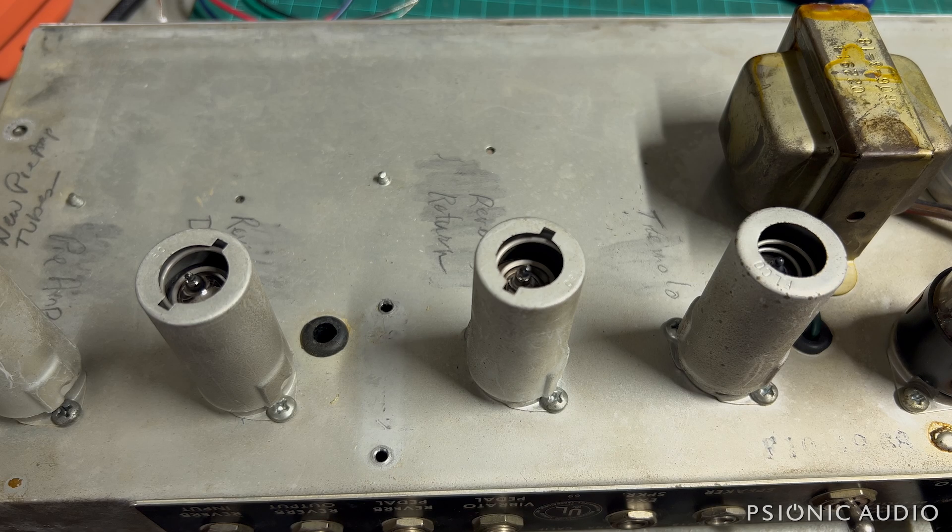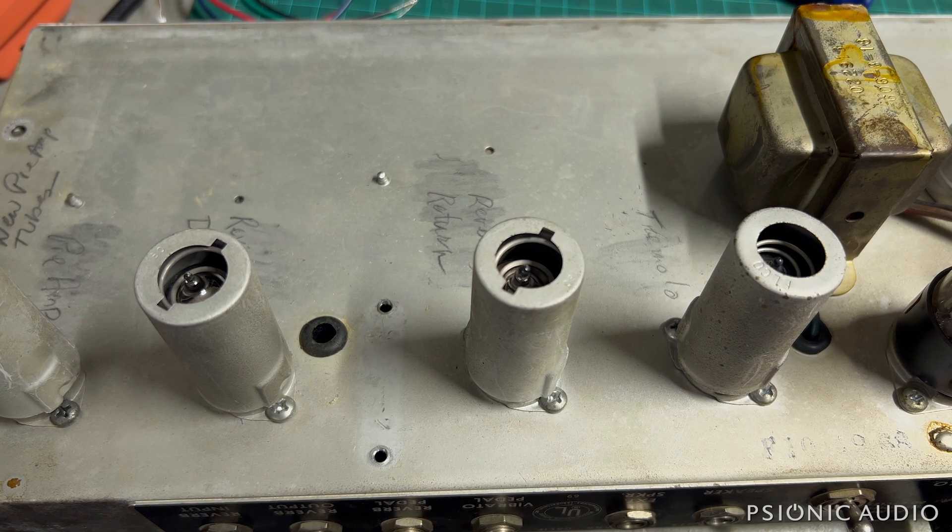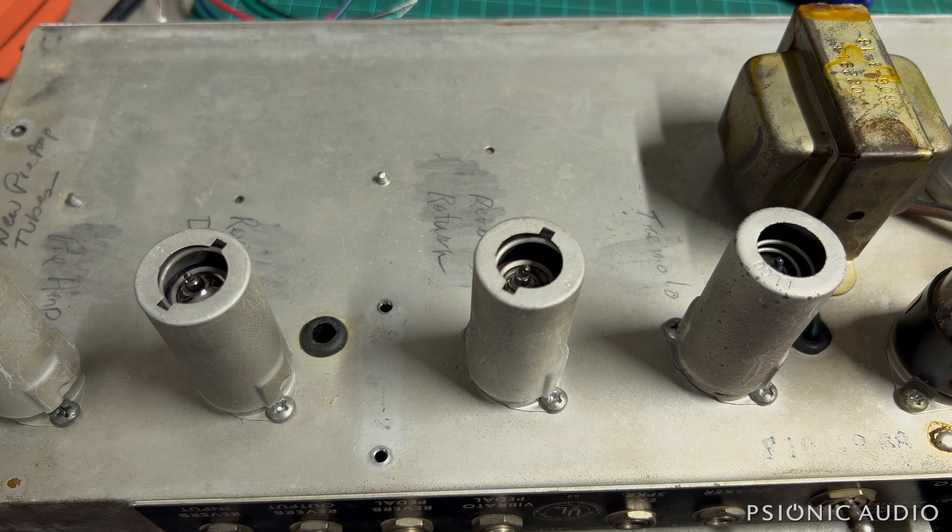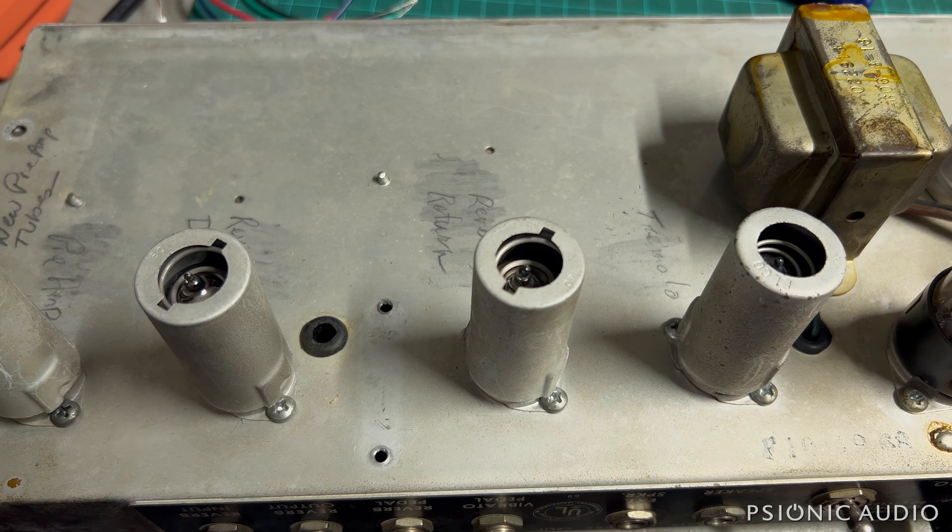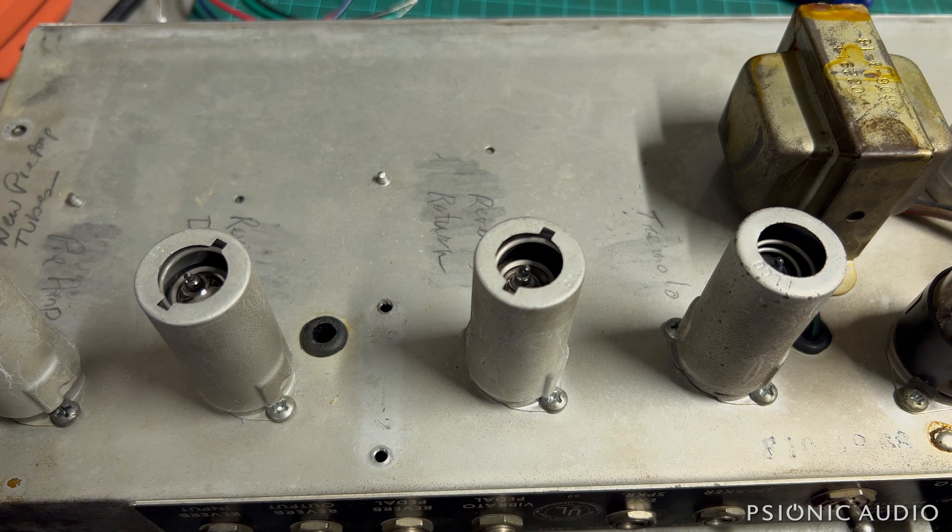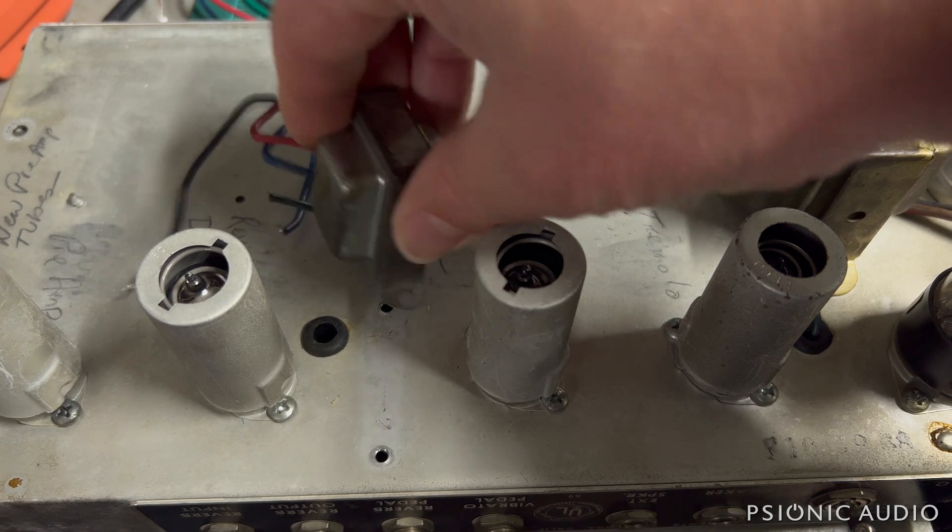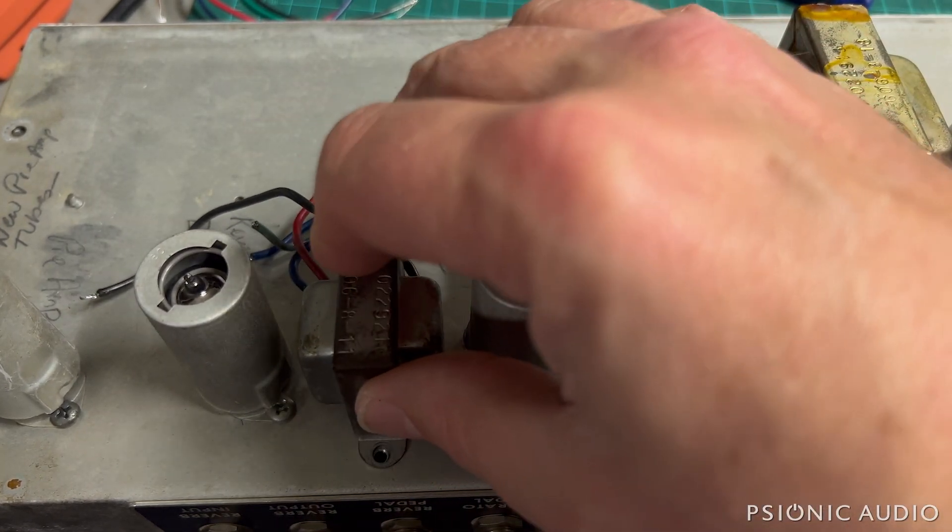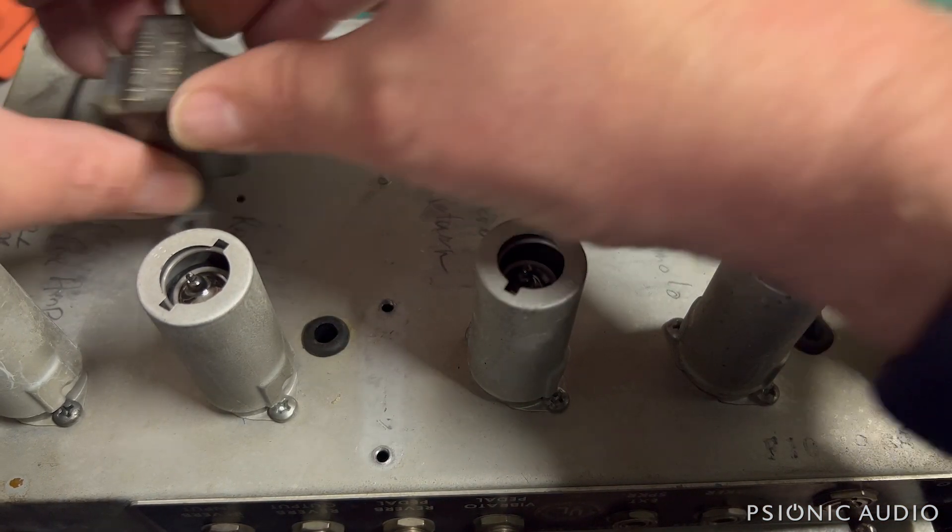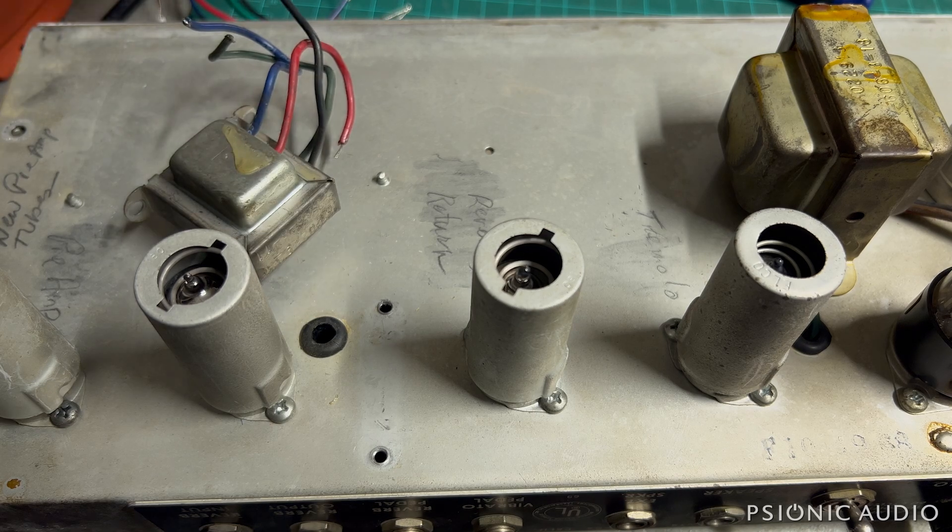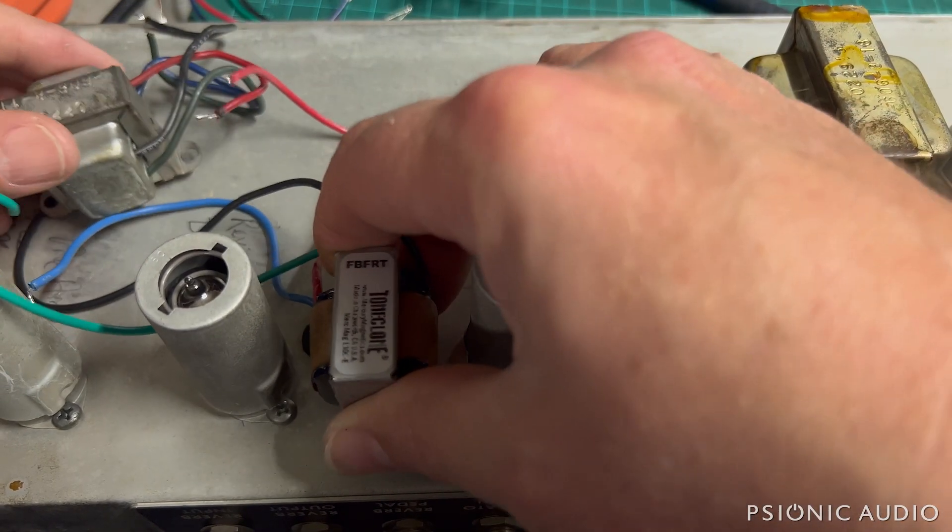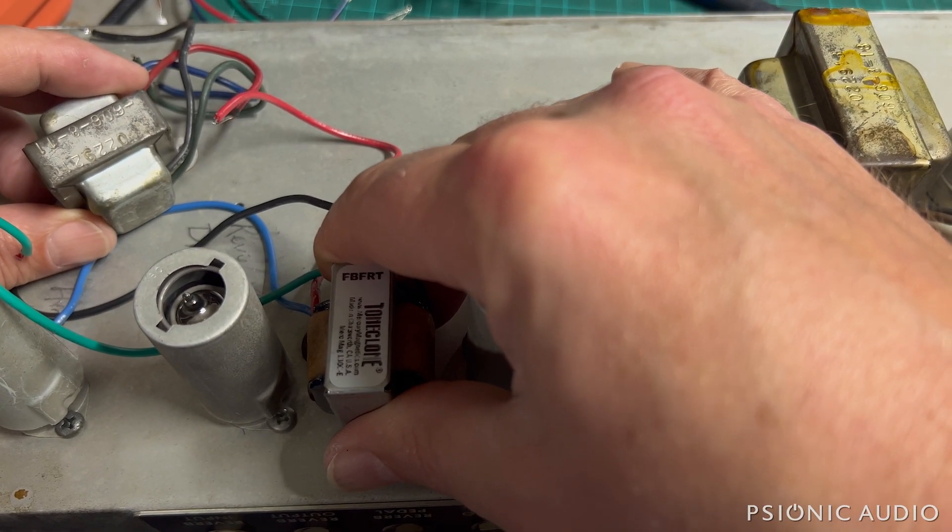Well, some days you just can't win. After running into that bad reverb tank and bad cables and crappy sounding speaker on the 66 Princeton, I thought I could finish that 68 Princeton here and at least get something done today. So this 68 Princeton came in a few weeks ago, and the original reverb driver transformer, the old Schumacher, I diagnosed it as arcing. And I confirmed that diagnosis by temporarily installing this Mercury Reverb Driver Transformer, which actually belongs to a different amp, so it could only be used temporarily. And the amp sounded great with that.